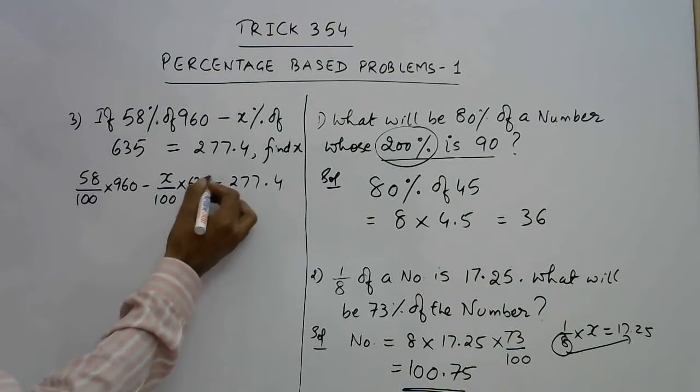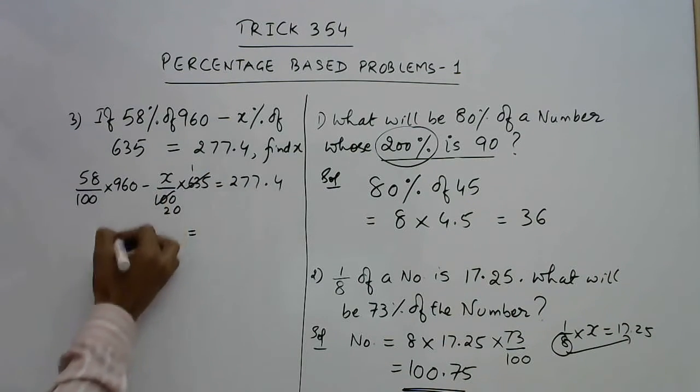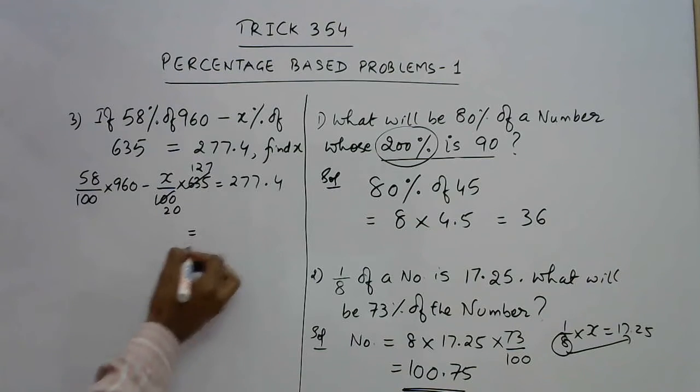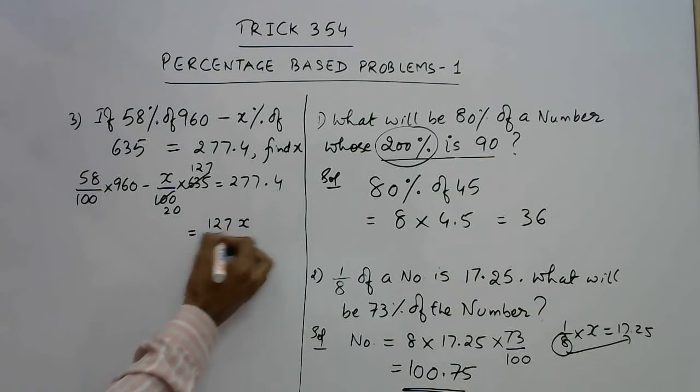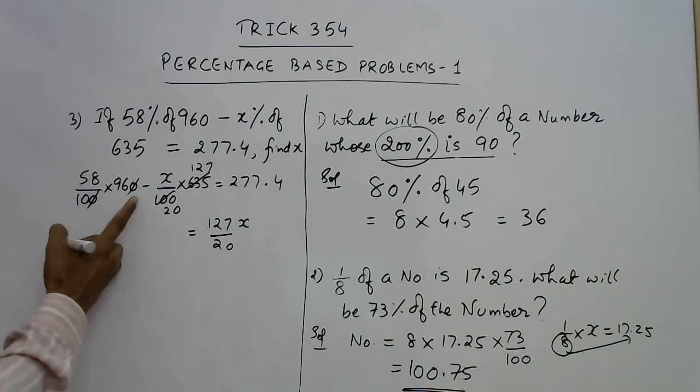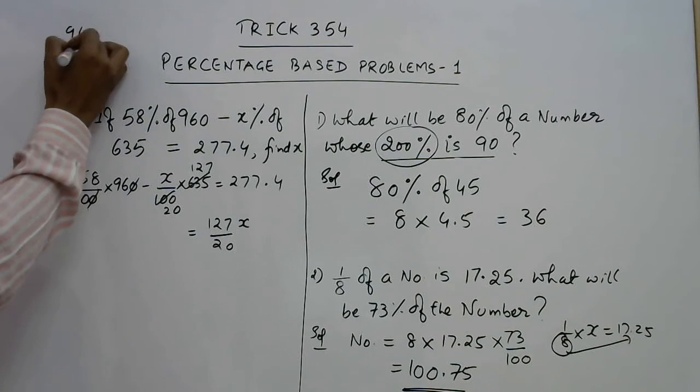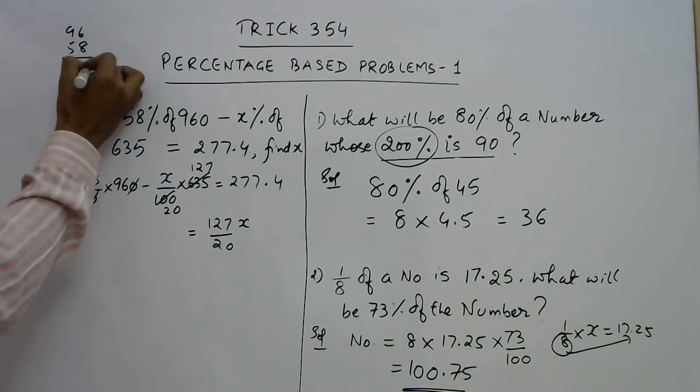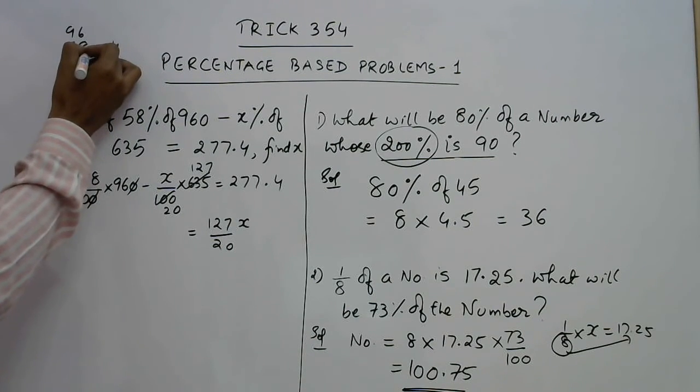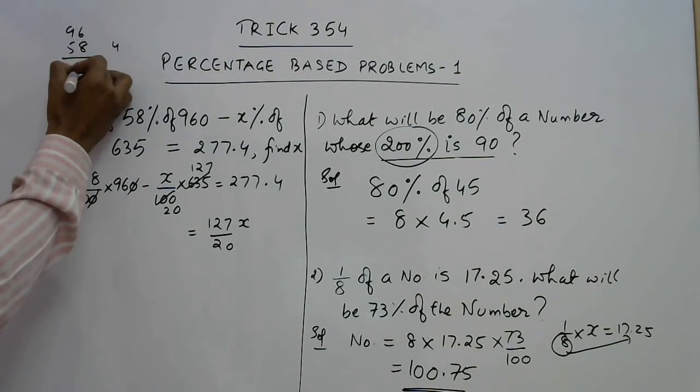If you cancel this 100, it will become 20 and this will become 127. So 127x upon 20. This is on the right side. Here 10 gets cancelled and here 10 gets cancelled, so you can just multiply 96 and 58. 96 and 58: 6 times 48, 84 carry 8, 9 times 72 plus 30, 102, 106, 10 carry. 9 times 45, 55. So 5568 upon 10.